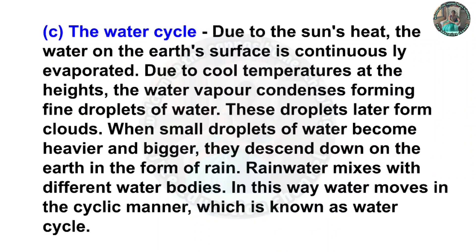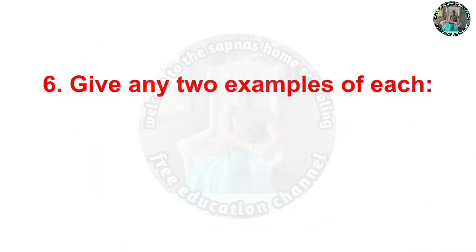C: The water cycle. Answer: Due to the sun's heat, the water on the earth's surface is continuously evaporated. Due to cool temperatures at higher altitudes, the water vapor condenses forming fine droplets of water. These droplets later form clouds. When small droplets of water become heavier and bigger, they descend to the earth in the form of rain. Rainwater mixes with different water bodies. In this way water moves in a cyclic manner, which is known as the water cycle.